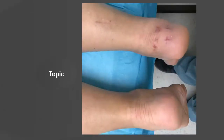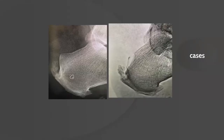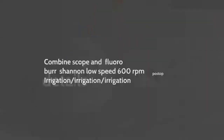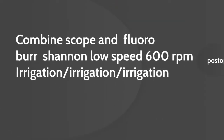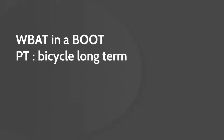In high-level elite sports patients, we try to avoid the gastrocnemius release because it produces some weakness. The central portal is very important, along with medial and lateral portals to resect ossifications and perform the Haglund resection. The combination of scope and fluoroscope, burr, shaver at low speeds, and irrigation — irrigation very important to avoid bony necrosis — is key. Post-operatively, patients are weight-bearing in a boot and go home with wound closure and exercises.